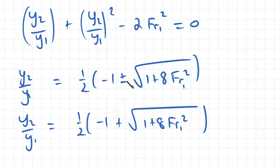So we can't have this minus here because that would give us a negative for y2 over y1. y2 over y1 must always be positive, so therefore we can only consider this as a positive here.